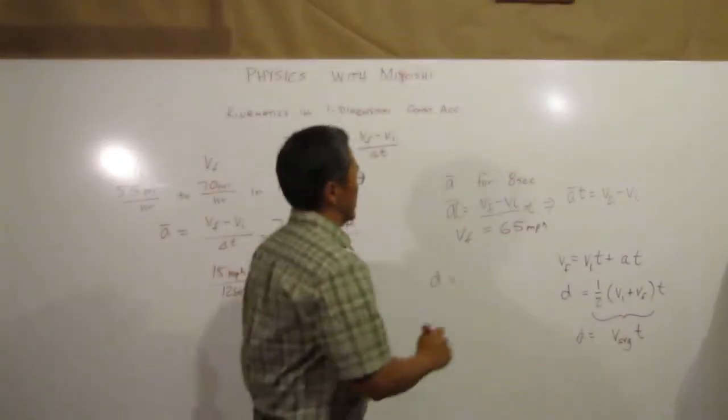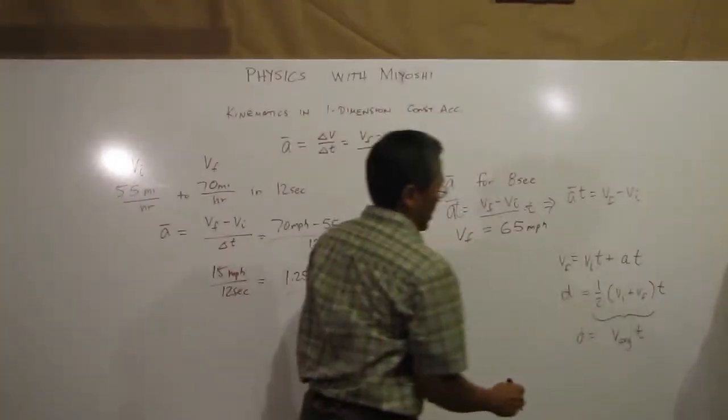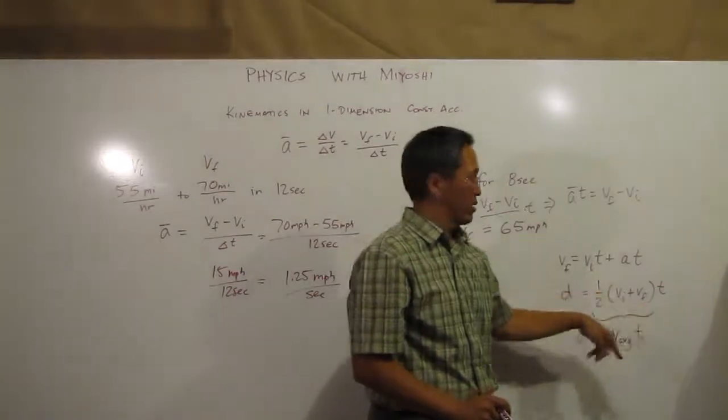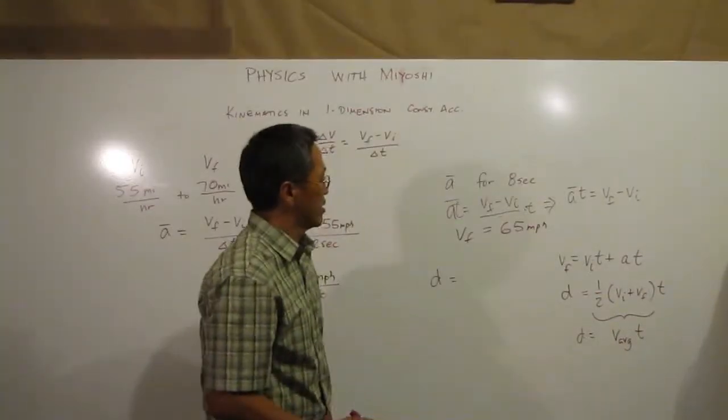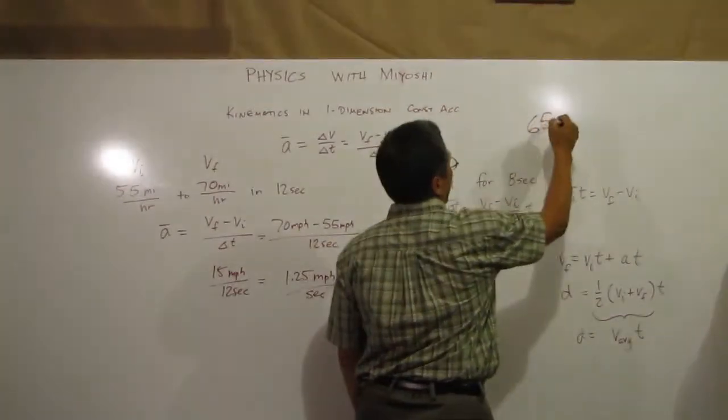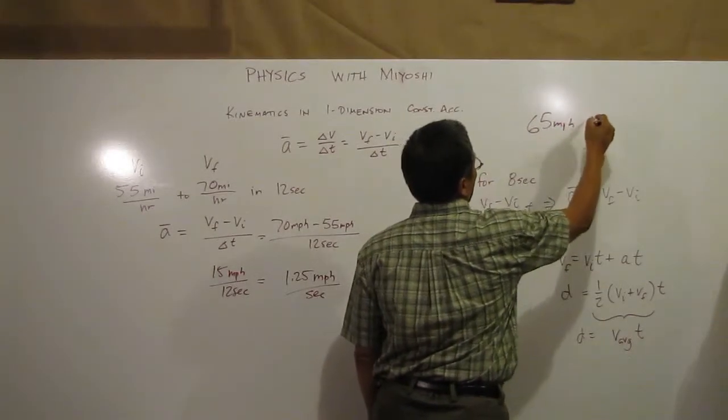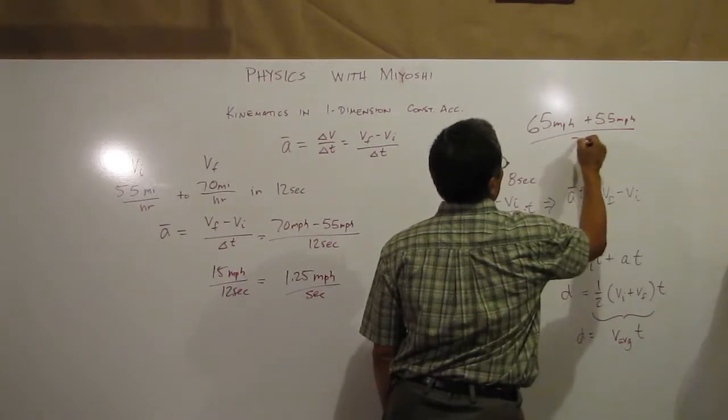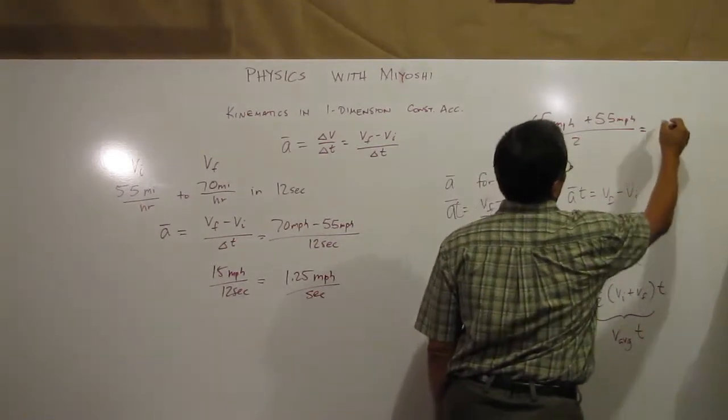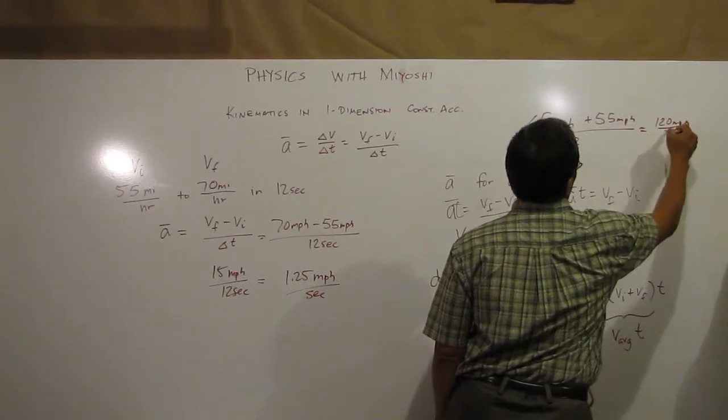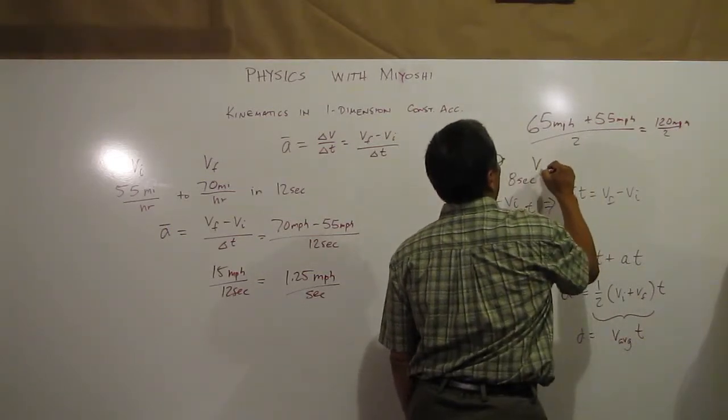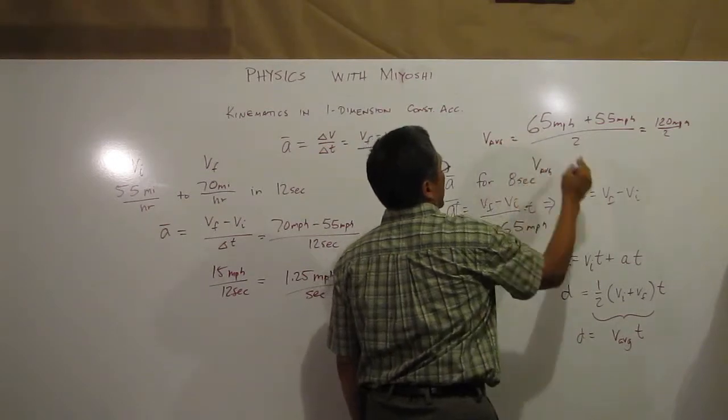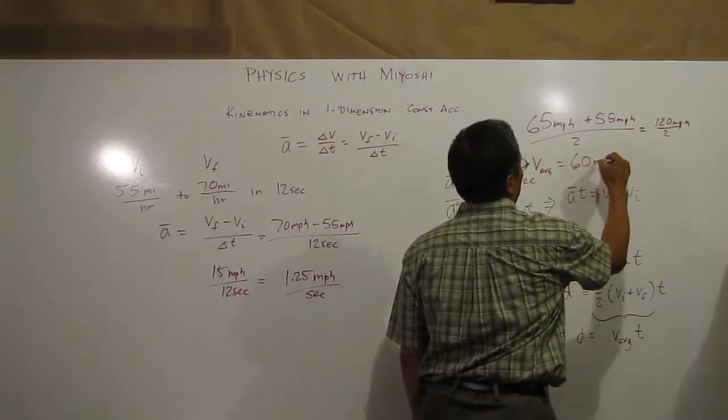Well what is my average velocity in this case? Well all I have to do is plug it in here. V average is V initial plus V final divided by 2, and that would be 65 miles per hour plus 55 miles per hour divided by 2. That's 120 miles per hour divided by 2, and so my V average is 60 miles per hour.